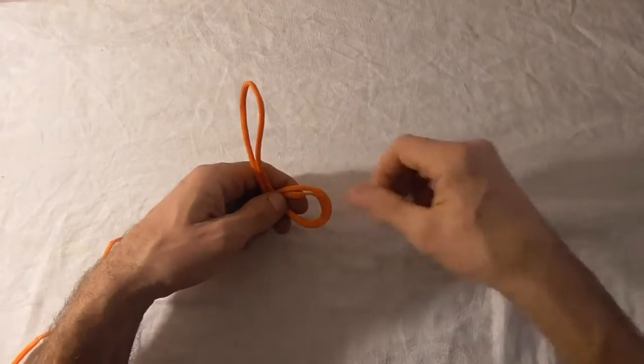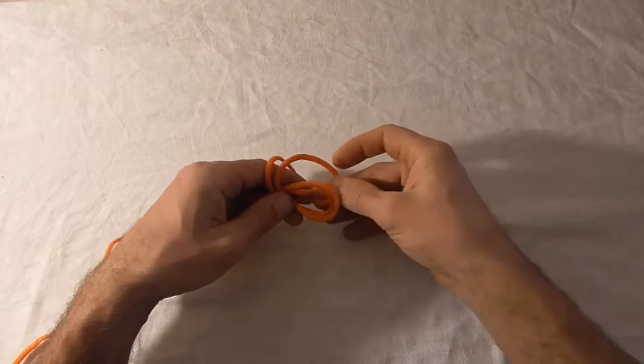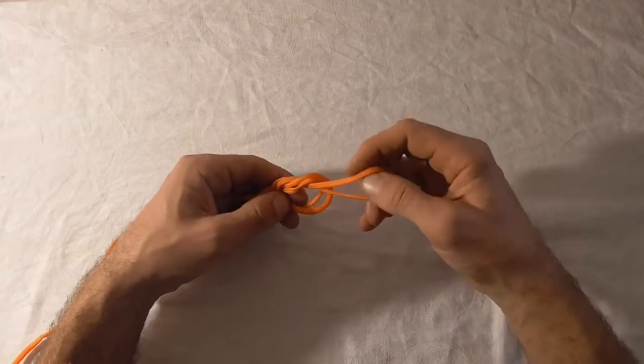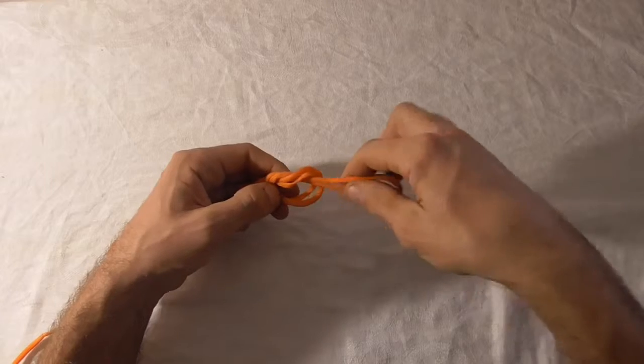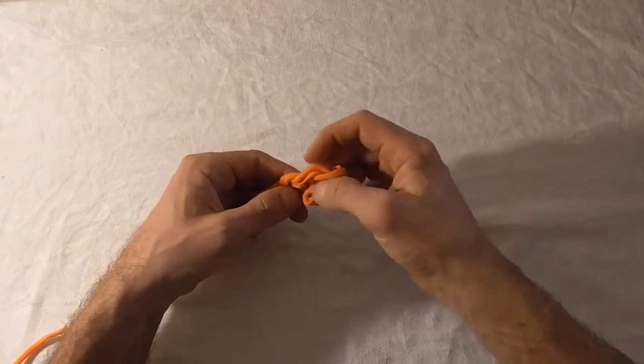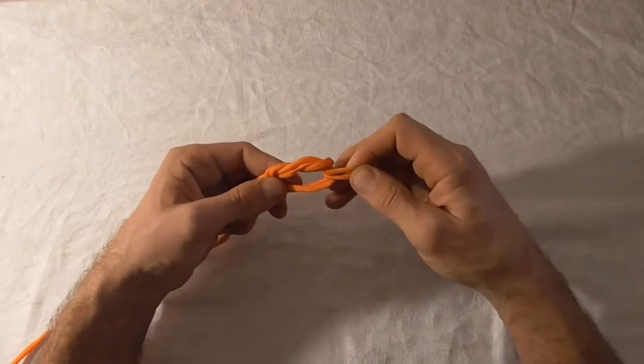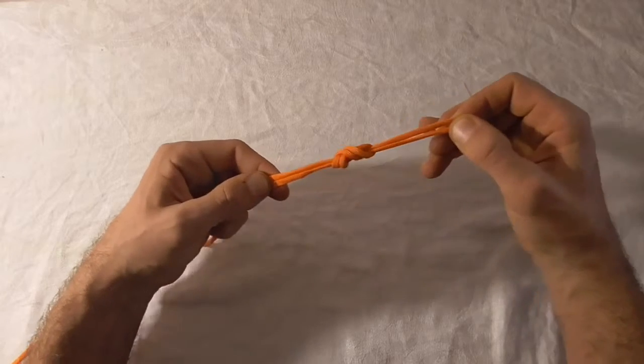We'll tuck it through as if we were tying an overhand knot, and then tuck it through one more time to do a double overhand and pull the whole thing tight.